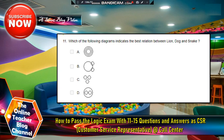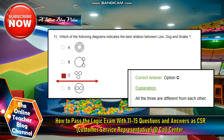Which of the following diagrams indicates the best relationship or relation between a lion, dog, and a snake? A, B, C, or D? So the answer is letter C. The explanation is all three are different from each other, so it means that they have different locations compared to the other drawings or diagrams.